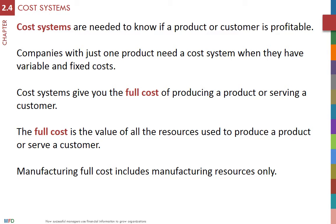To estimate the full manufacturing cost of a product, we need to build a model of how resources are used. This model, called a cost system, traces, assigns, or allocates — all these words have the same meaning in the management world — the cost of the resources to products.